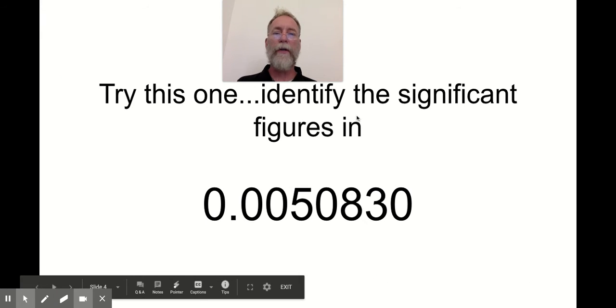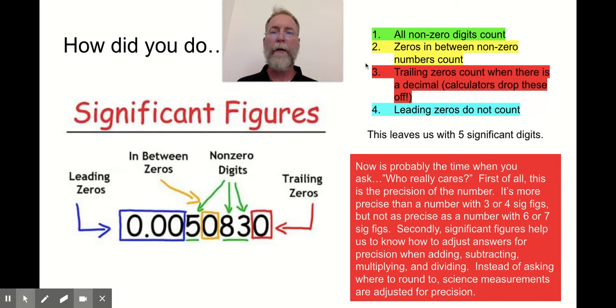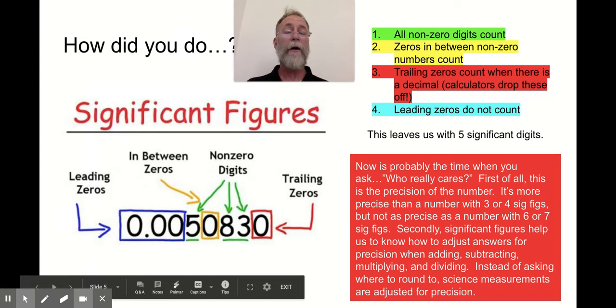So let's try this one. It's a random decimal number, 0.0050830. Can you tell me what figures are actually significant in this number? And you can stop the slideshow or the video if you want and try and figure it out. But here are significant numbers. First of all, remember, all non-zero digits count. So that means the five, the eight, the three, they all count as being measured. They have to. They have to come from somewhere.